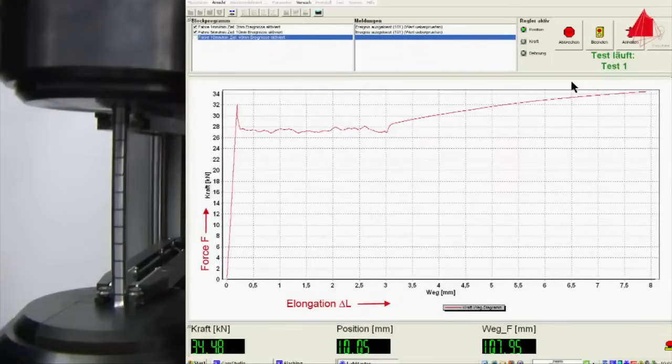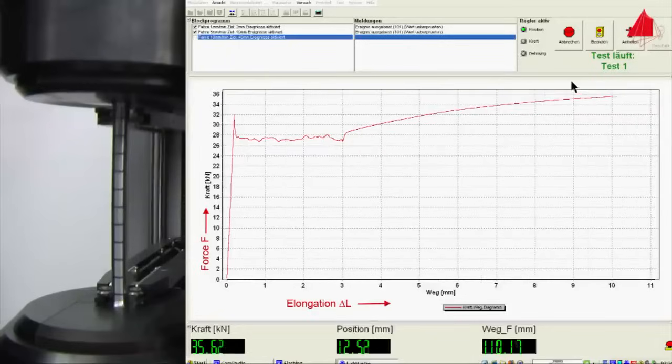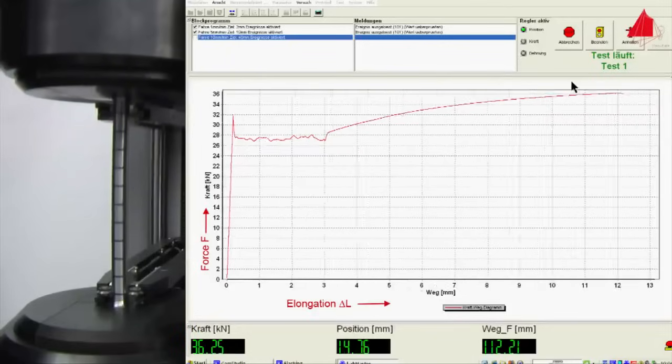Up to the point of maximum force, the test piece is strained uniformly along its length. This means that the test piece gets longer and thinner, but keeps a cylindrical shape.